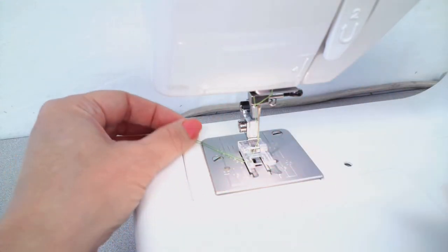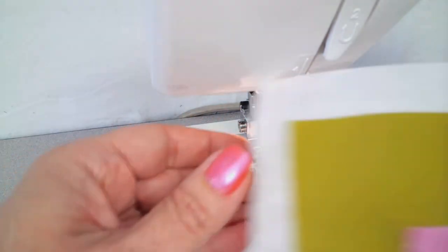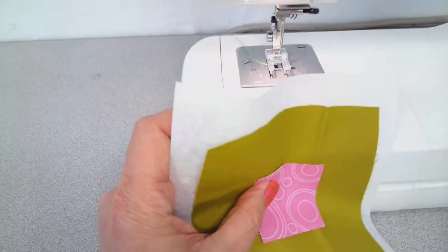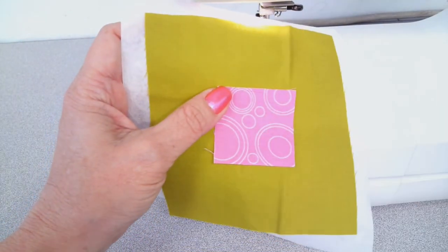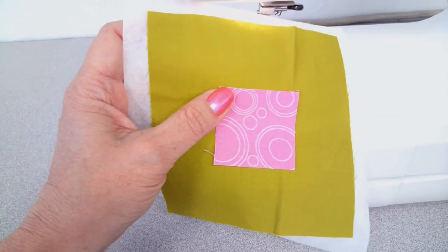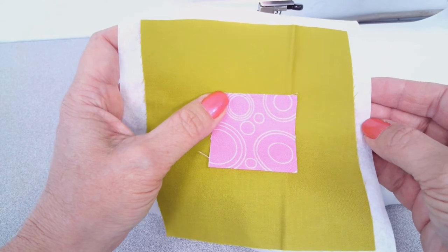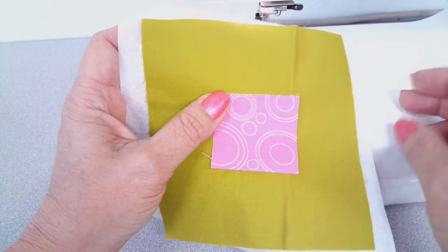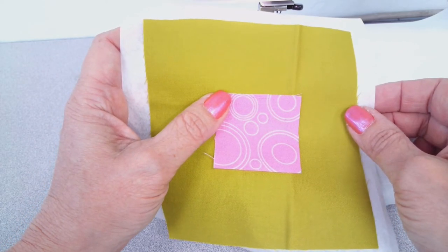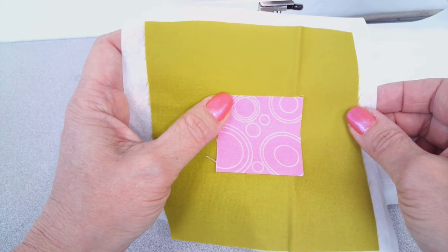I have a little sandwich here of my fabrics with my applique piece, my background fabric, and I'm using a tear-away stabilizer. Because I'm just sewing on two pieces of fabric, the tension of the thread as it swings back and forth can cause the fabric to buckle.